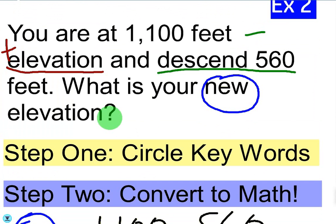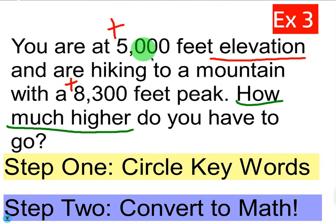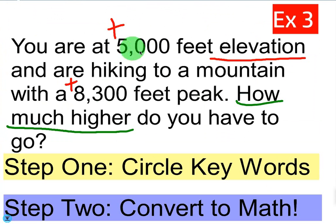To recap the three simple steps: circle keywords, convert to math, and then solve. Now for example three: you are at 5,000 feet elevation and you're hiking to a mountain with an 8,300-foot peak. How much higher do you have to go? Let's do step one and circle key words. Just like the previous example, if you're at 5,000 feet that's a plus, so we underline 'elevation' and put a plus next to 5,000. We also put a plus next to 8,300 because that's also positive 8,300 feet above sea level.